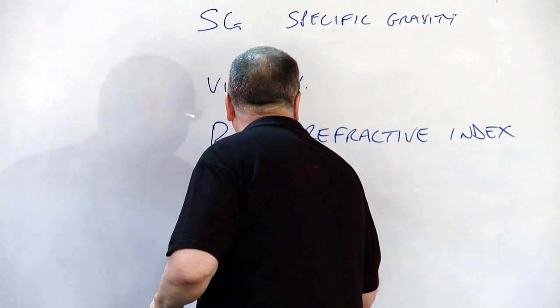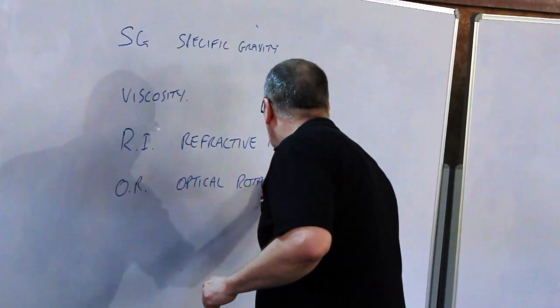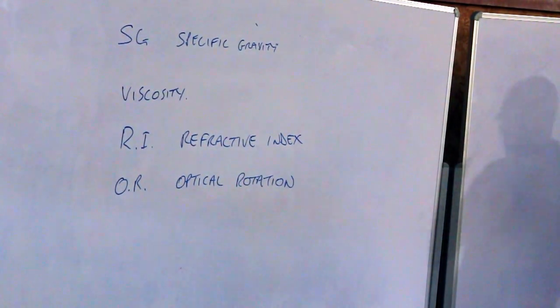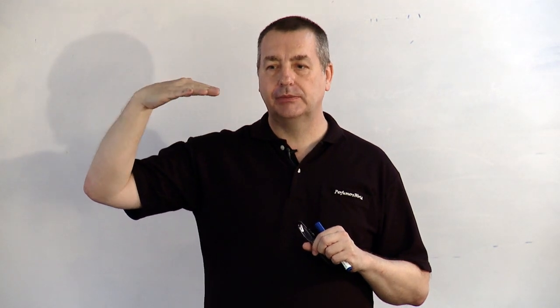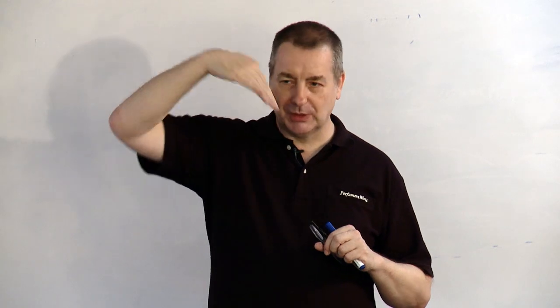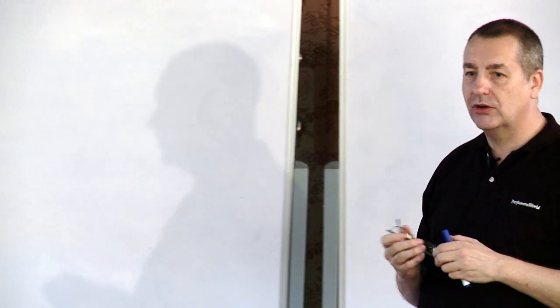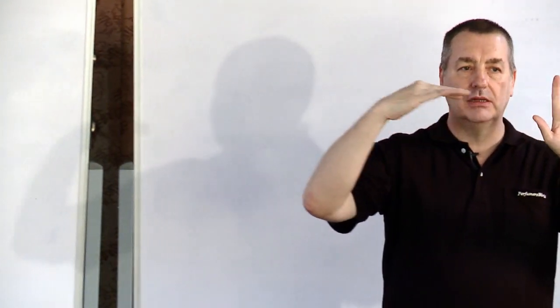Next one is optical rotation. When light hits a surface, sometimes the material twists as well as bends — it twists like that. Do you remember we talked about levo and dextro? Levo and dextro means left and right, like the left and right hand — same structure but a different way round. So when light hits it, it turns in a different direction.